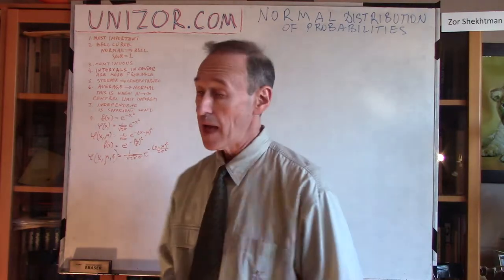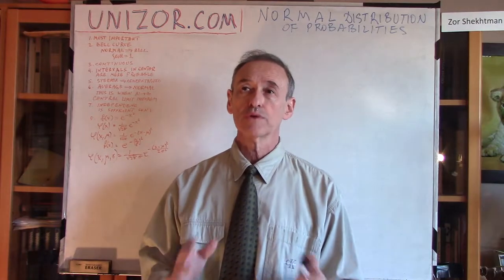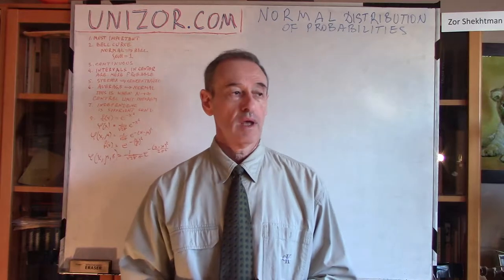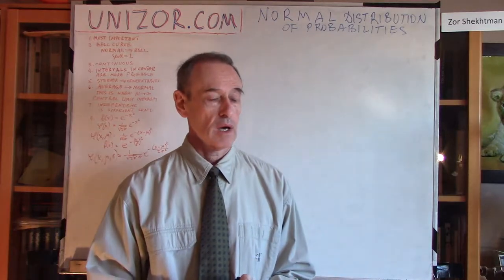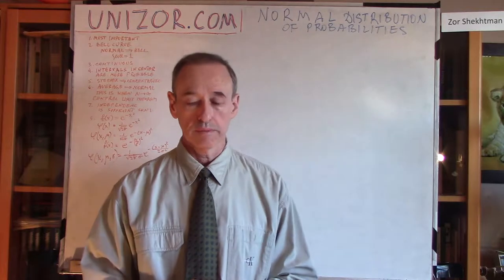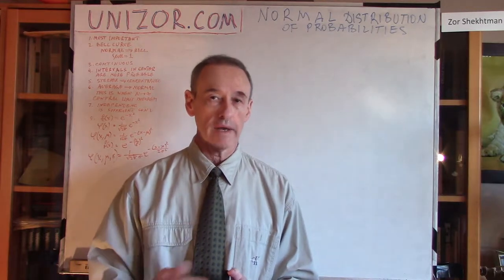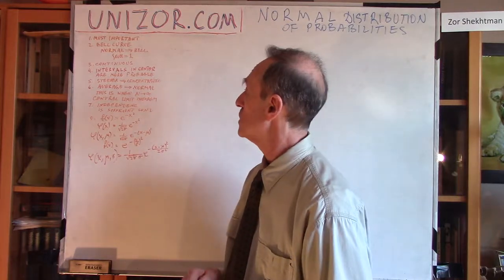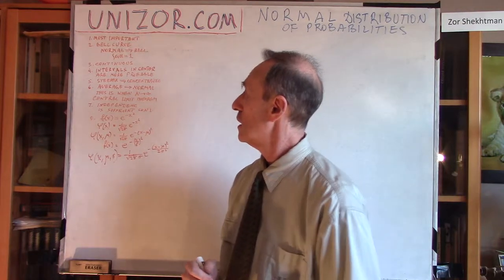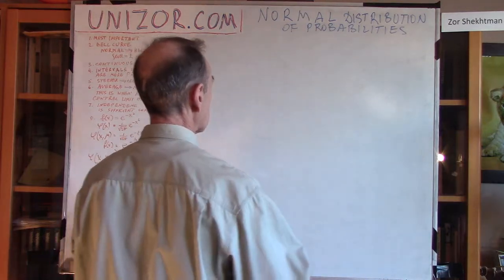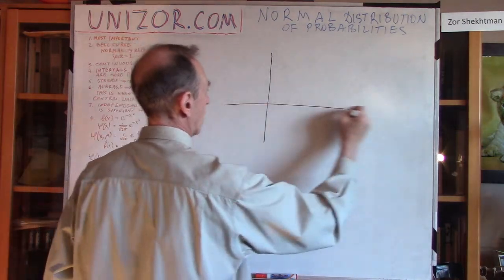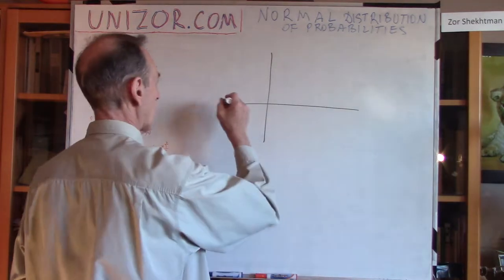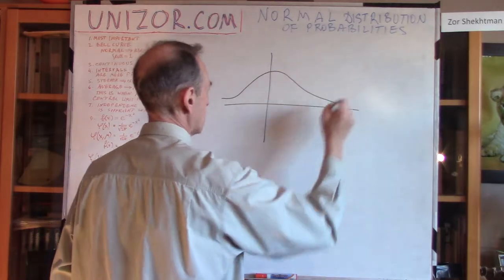As I mentioned, the Theory of Probabilities' most important distribution is the Normal distribution. I will substantiate the reason why it's called the most important probability distribution. But for now, I'd like to address it as something relatively known to you — everybody has heard about the term "the bell curve."